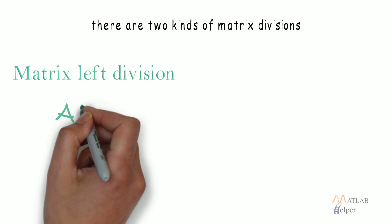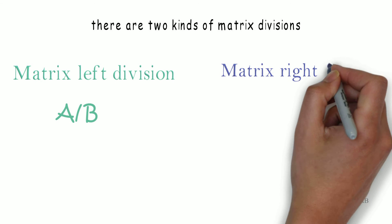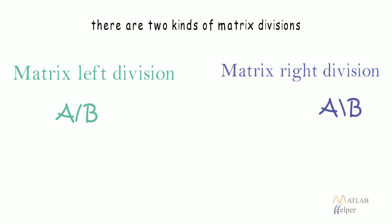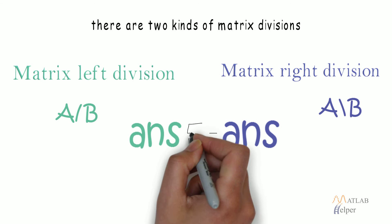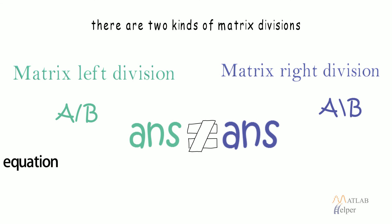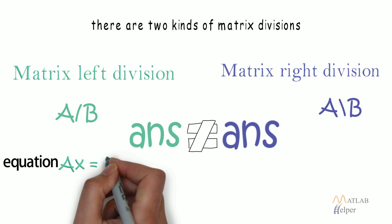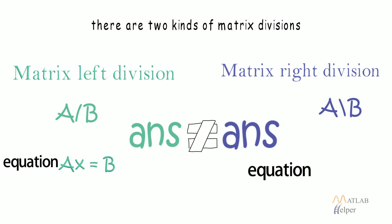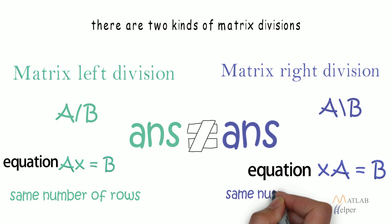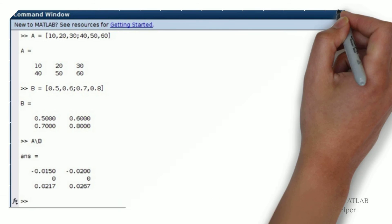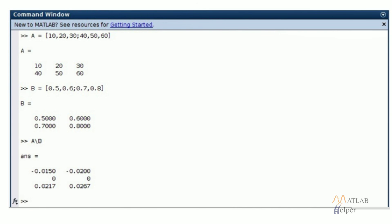On the other hand, there are two kinds of matrix divisions: matrix left division and matrix right division. Both of these yield different results. Since left division corresponds to the solution for the equation A x equal to B and right division corresponds to x A equal to B, it is necessary that both matrices have same number of rows in case of left division and they have same number of columns in case of right division.